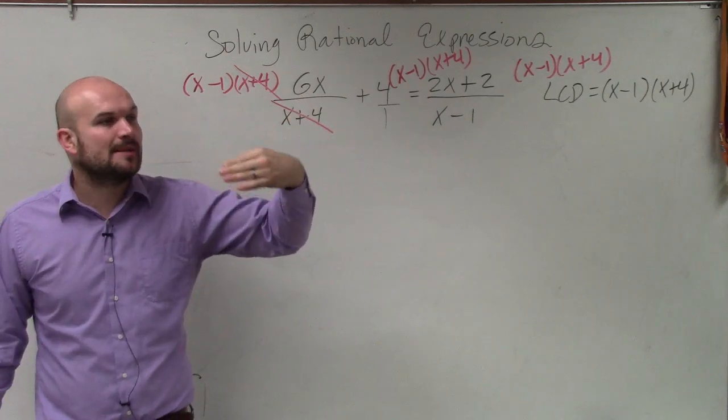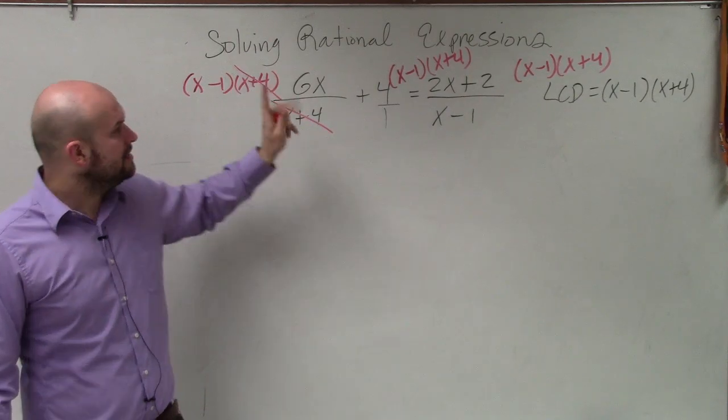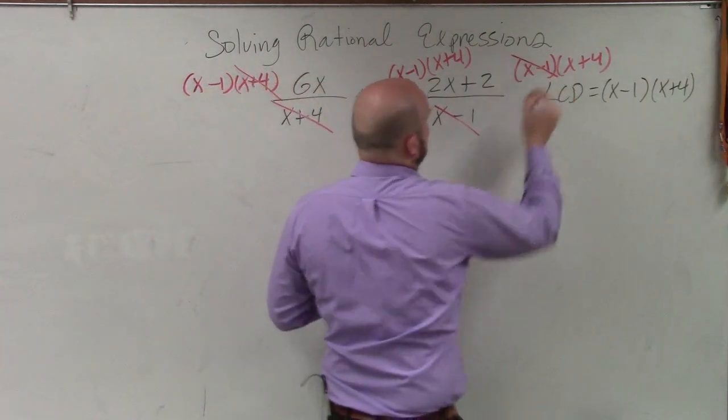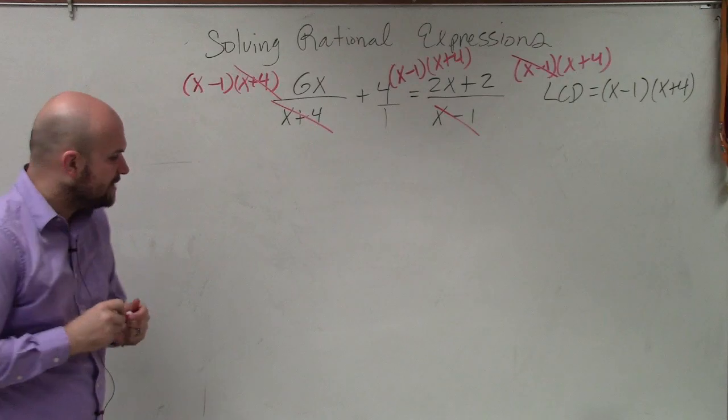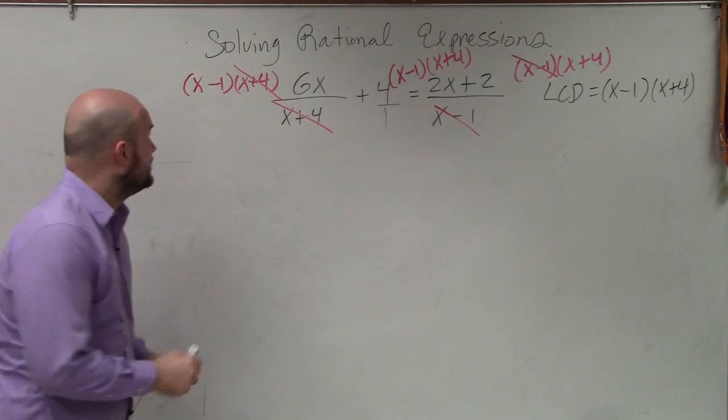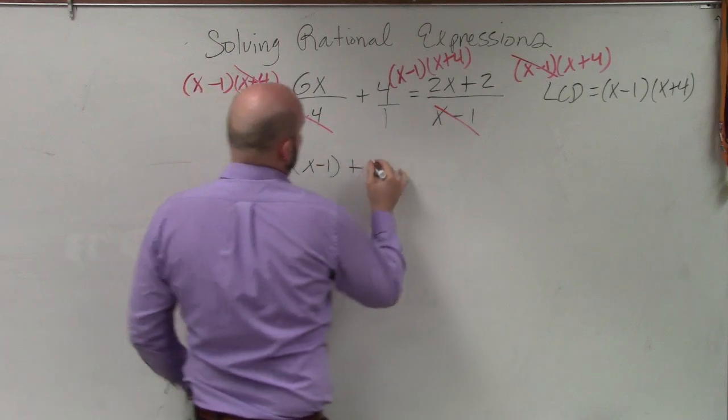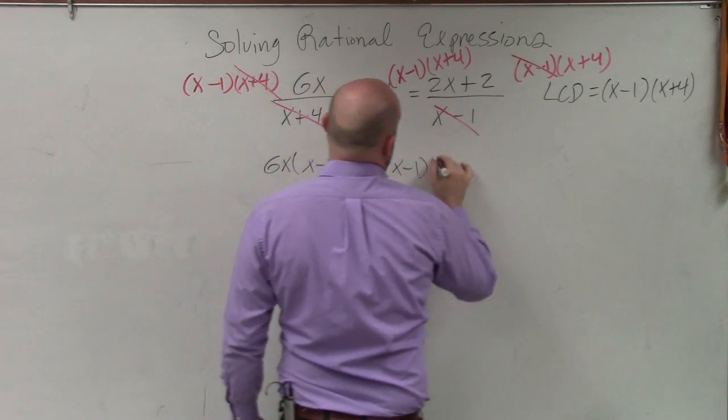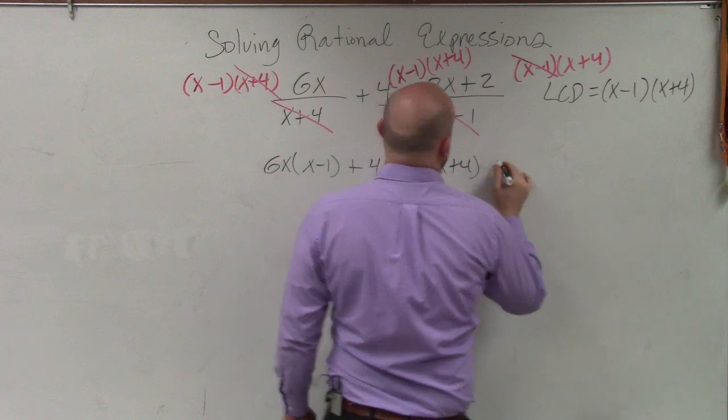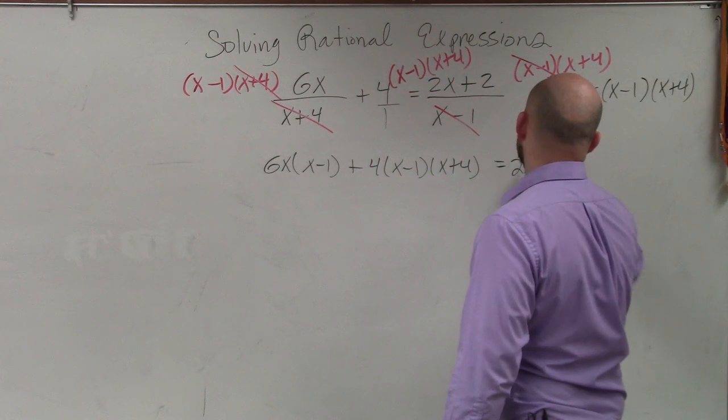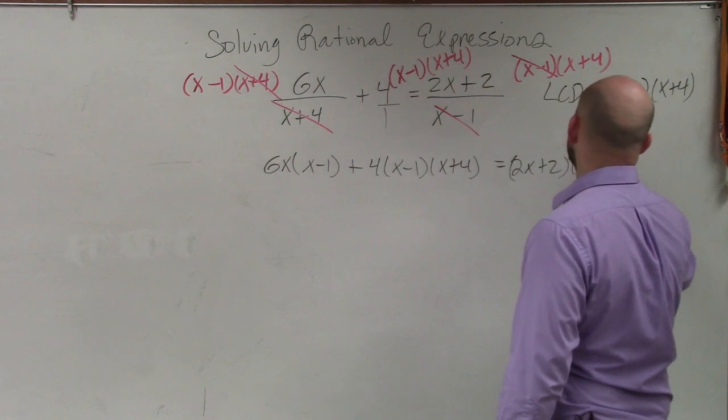Remember, terms are separated by addition and subtraction. So I've got to multiply by every single term. And then over here, my x minus 1's divide up. So now, my equation is going to be 6x times x minus 1 plus 4 times x minus 1 times x plus 4 is equal to 2x plus 2 times x plus 4.